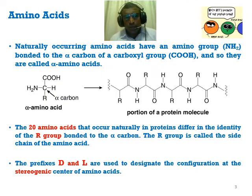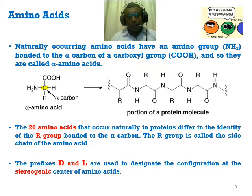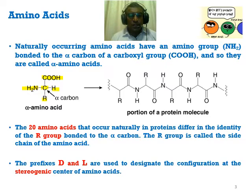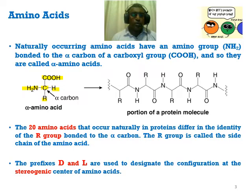Now we look at the amino acid. The general structure of an amino acid has carbon in the center, referred to as the alpha carbon. If more carbons are attached in the R group, they are referred to as beta carbon, gamma carbon, and so on. The basic structure must have carbon in the middle, a carboxylic group, an amino group, hydrogen, and the R group. The R group is the side chain that changes from one amino acid to another among the 20 amino acids.